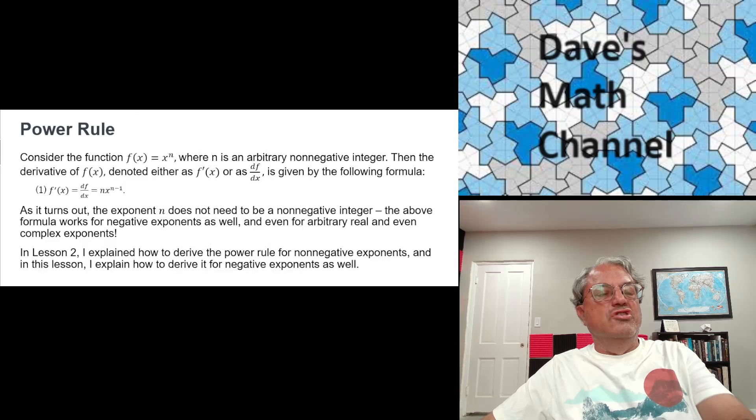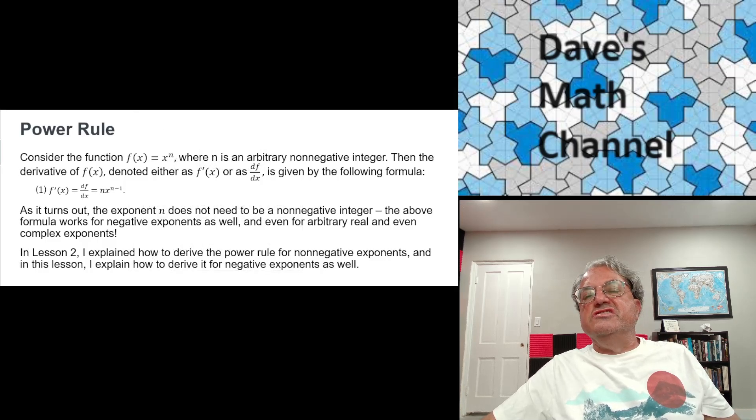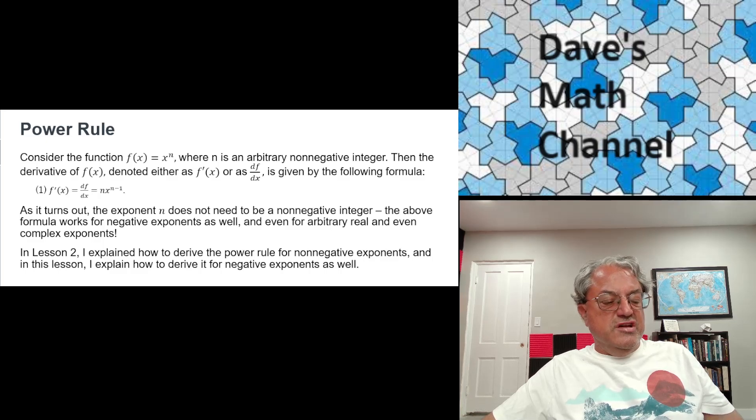So let's begin. Here's the power rule. If f(x) is x^n, we're now assuming n can be an arbitrary integer, negative or positive.